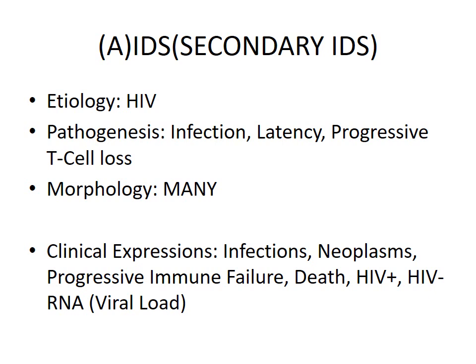Morphological changes are a result of opportunistic infections and neoplasms that arise due to the body's compromised immune response against HIV. Clinical expressions include opportunistic infections presenting with fever and flu-like symptoms, and neoplasms such as lymphomas. After the latent period, there is progressive immune failure and loss due to decline in T-cell numbers, leading to death of the patient.